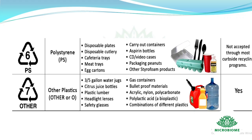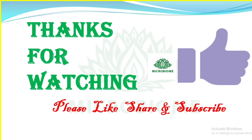Code 7: Other plastics, used in plastic lumber, headlight lenses, safety glasses, gas containers, bulletproof materials, acrylic, nylon, polycarbonate, polylactic acid, and combinations of different plastics. If you have any doubts, please ask in the comment section. Remaining chapters will be discussed in upcoming classes, so please subscribe to our channel for more videos.